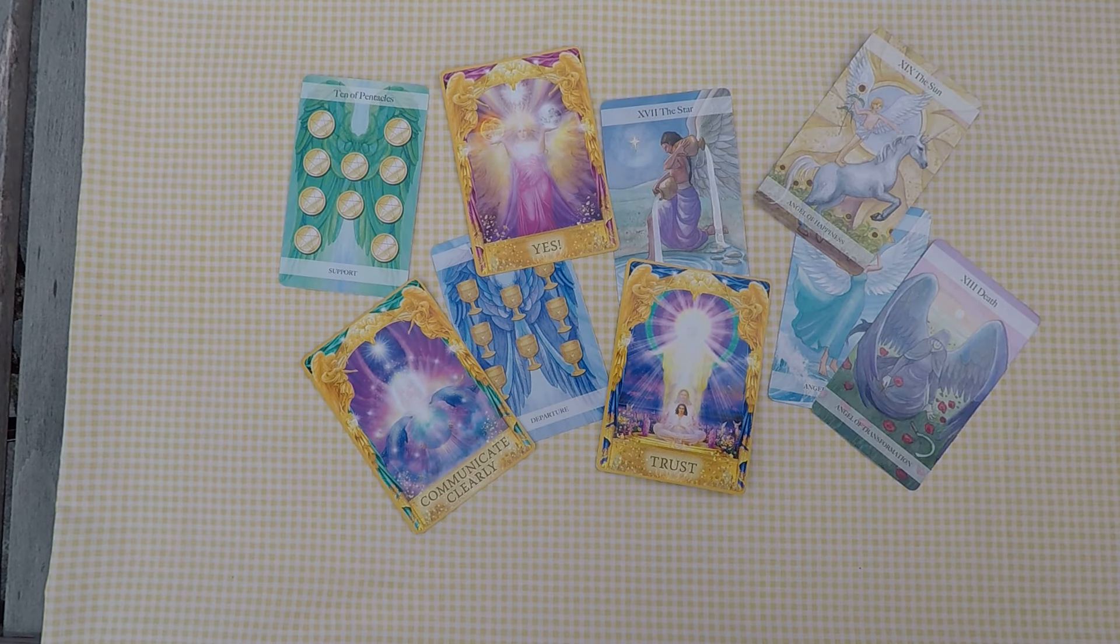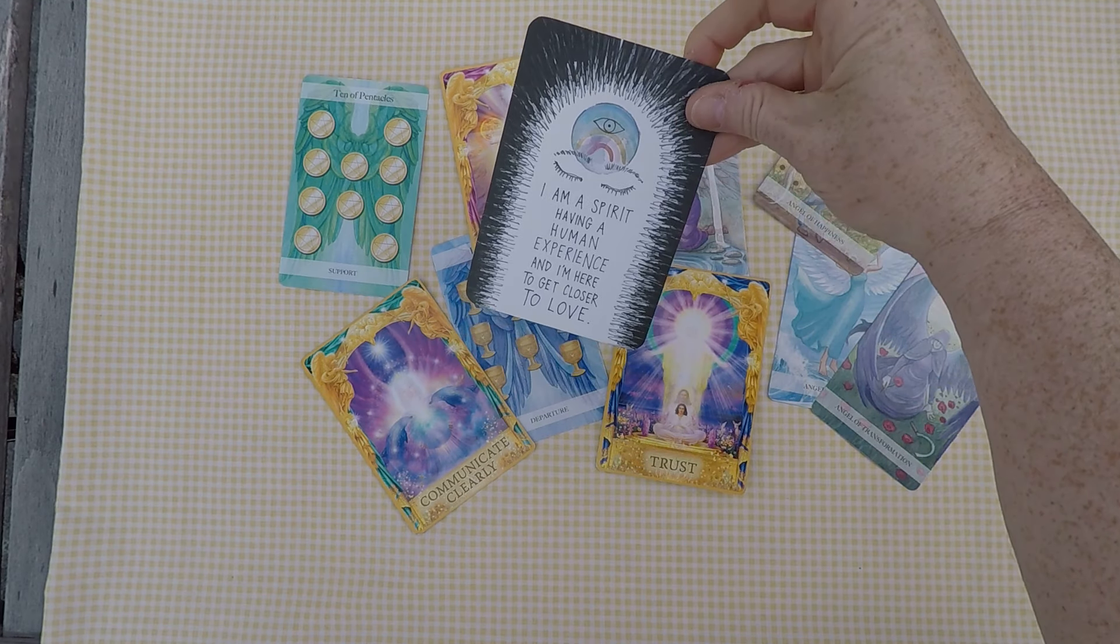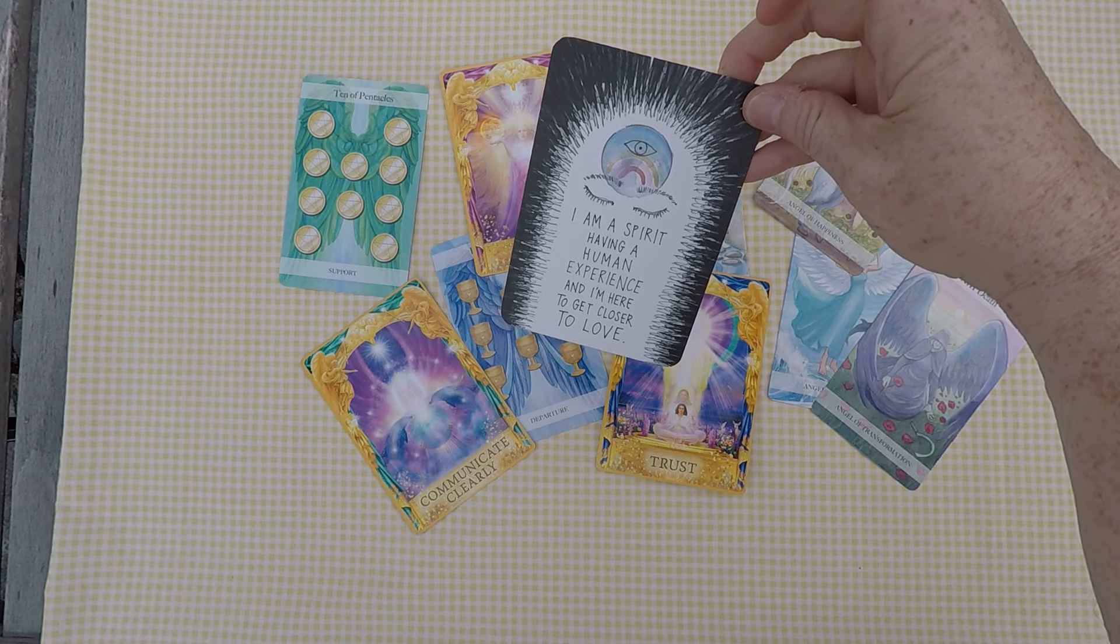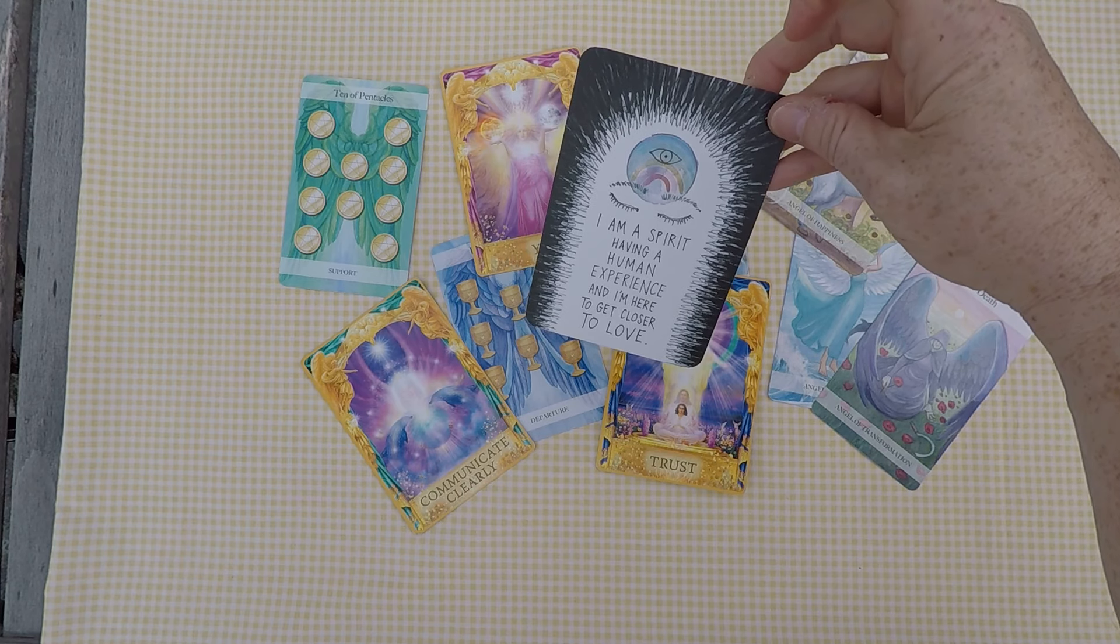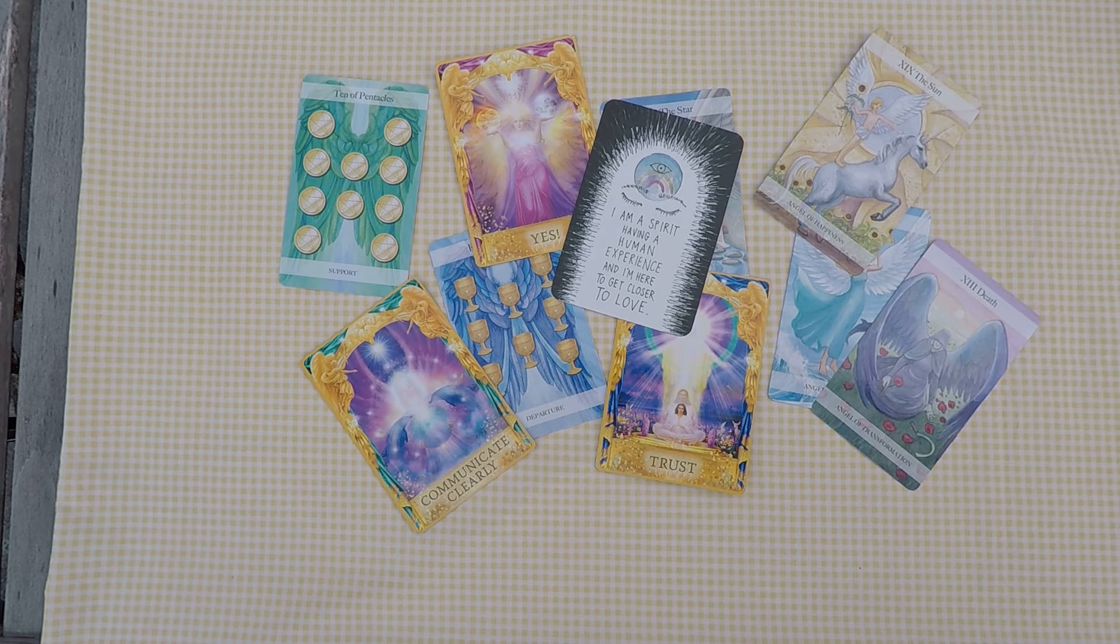All right. Let's do our affirmation card from the Universe Has Your Back. I am a spirit having a human experience, and I am here to get closer to love. Yes. You are. Take that eight of cups and get closer to it.